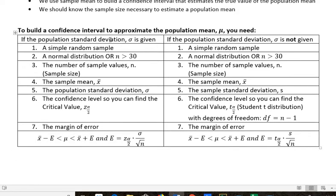That is, if you want to build a confidence interval you may be given the population standard deviation sigma or you may not be given the population standard deviation, and that determines which methods you're going to use.